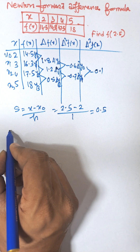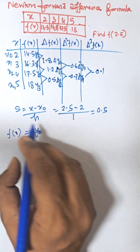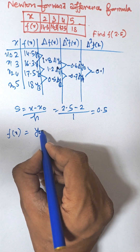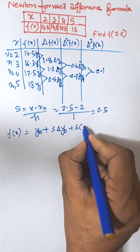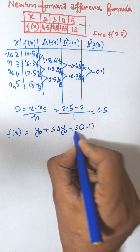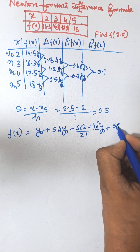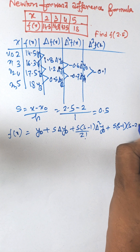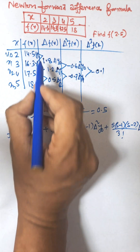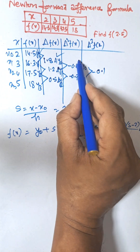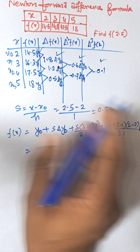Newton's Forward Difference Formula states: f(x) equals y₀ plus s times del y₀, plus s(s minus 1) over 2! times del square y₀, plus s(s minus 1)(s minus 2) over 3! times del cube y₀, and so on. Now we substitute all the values to get the result.